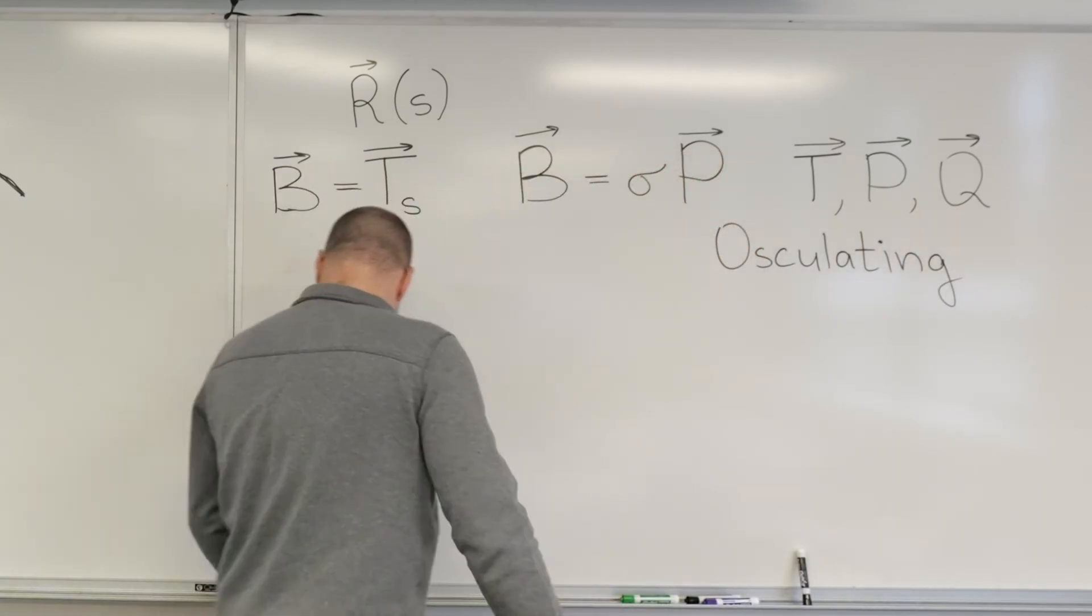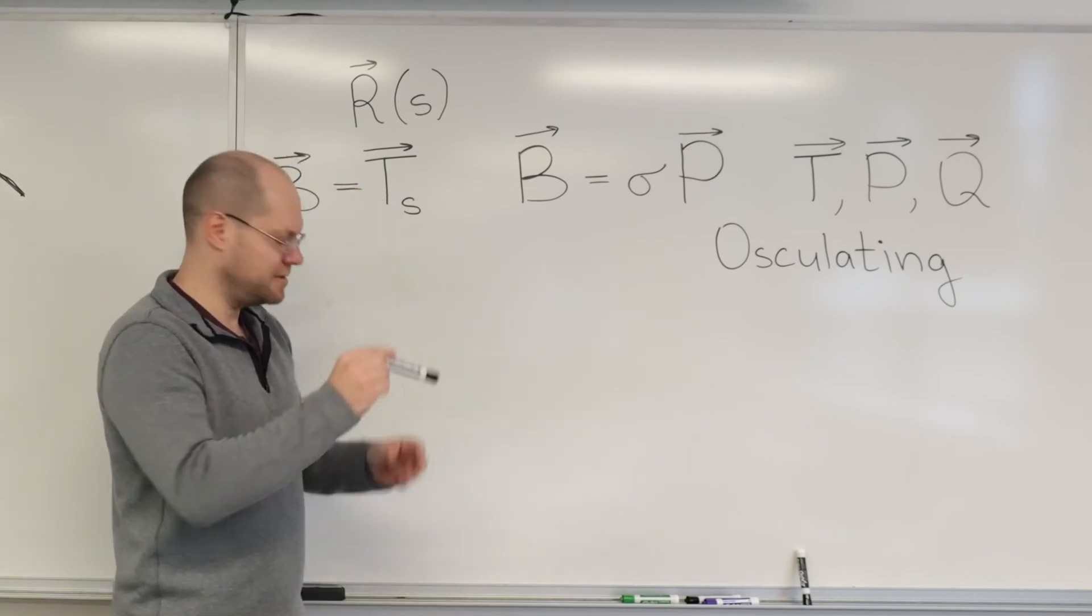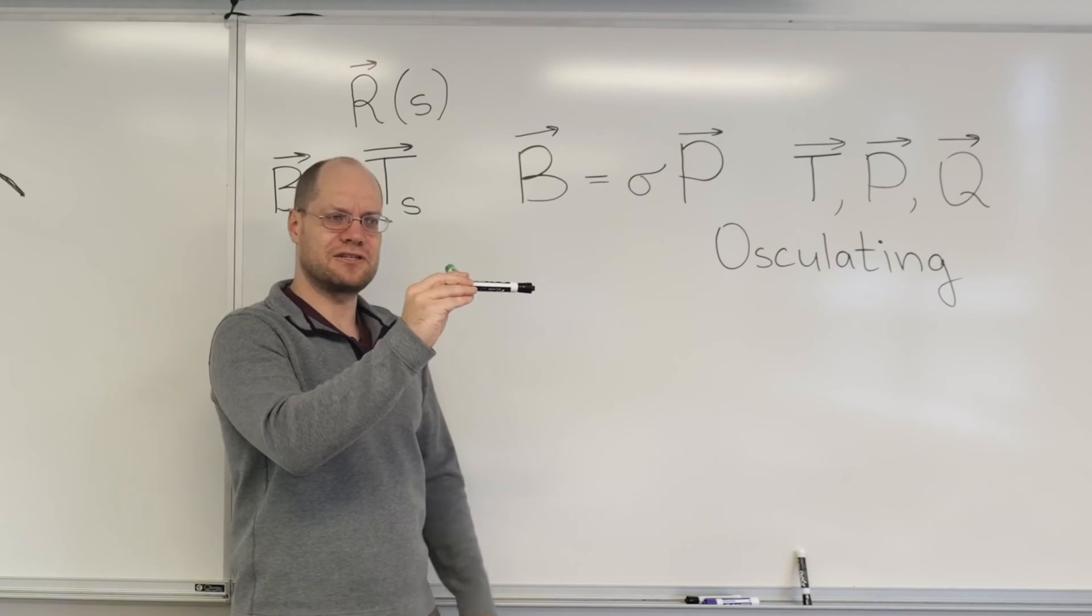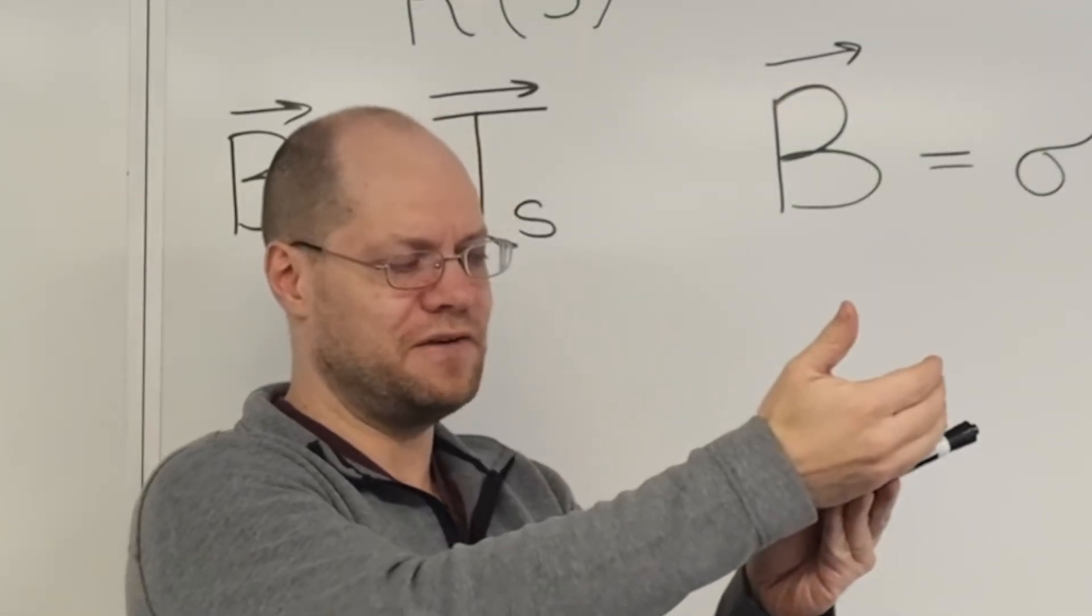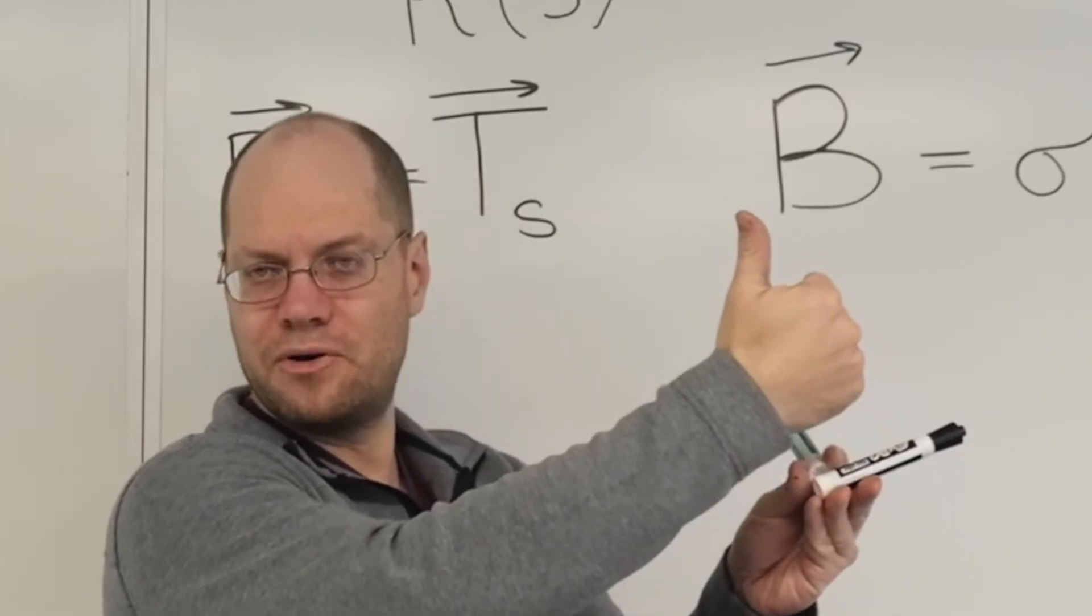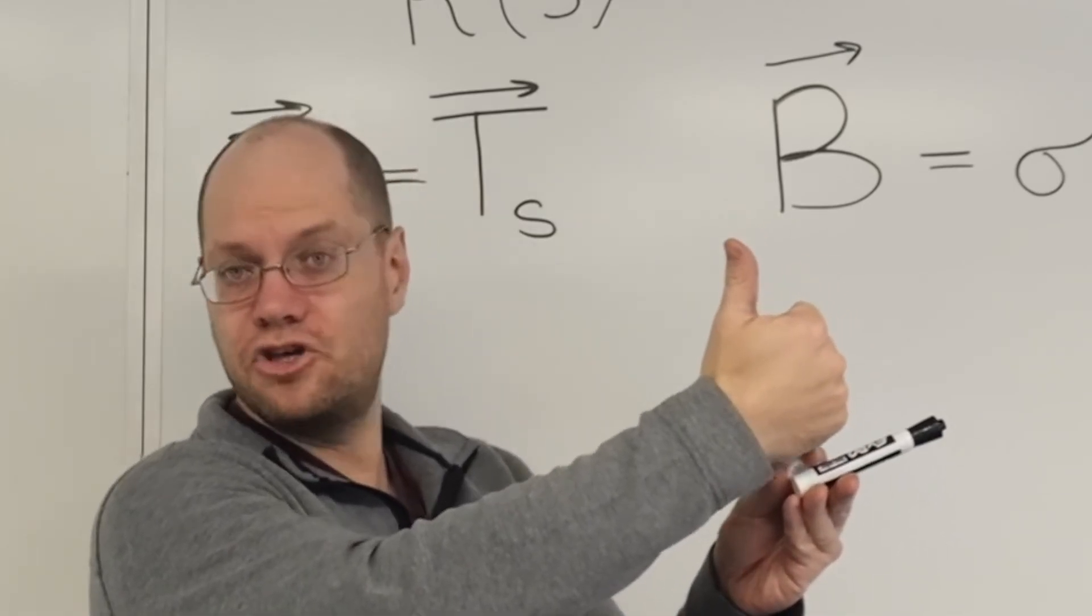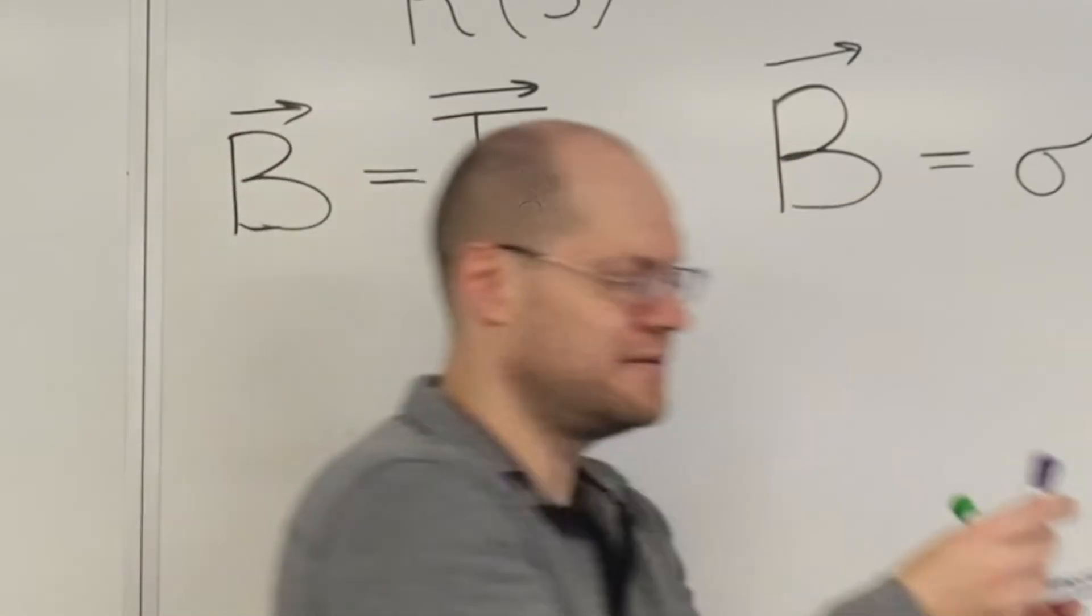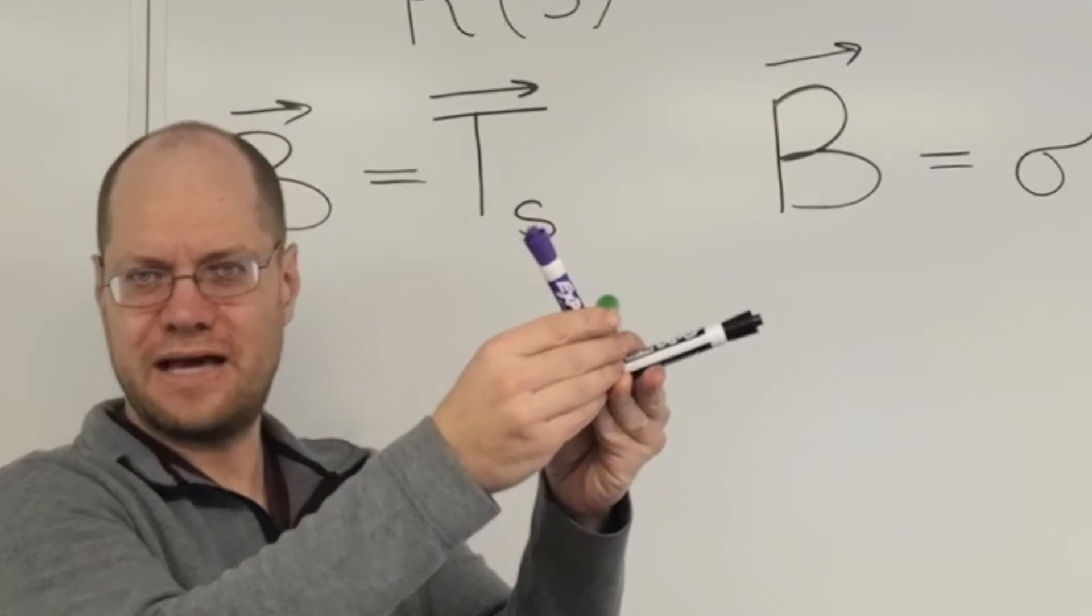Meaning that if T points in this direction and P points in this direction, you will use your right hand and curve your fingers from T to P. And whichever way your thumb points, that's where Q is directed. So Q would be directed this way. That would be the triplet.